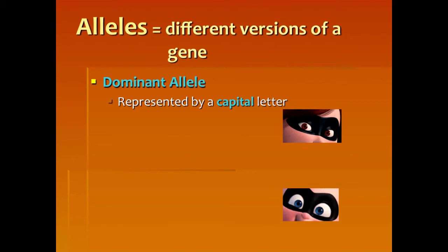When we talk about alleles and the two different versions they can be — you can have a dominant allele. Think about what the word dominant means: it's very overpowering, it's going to get its way. In genetics, a dominant allele means that allele is always going to show — it will have the phenotype. We represent dominant alleles in genetics with a capital letter. For example, if brown eyes are dominant, I would write it with a big B. Anytime you see a capital letter in genetics, it is dominant, meaning it is always going to show no matter what.